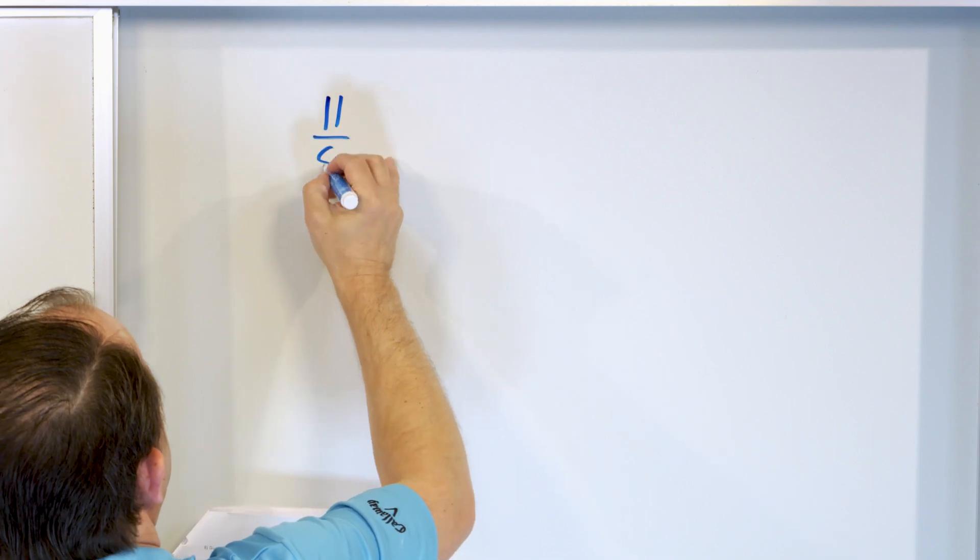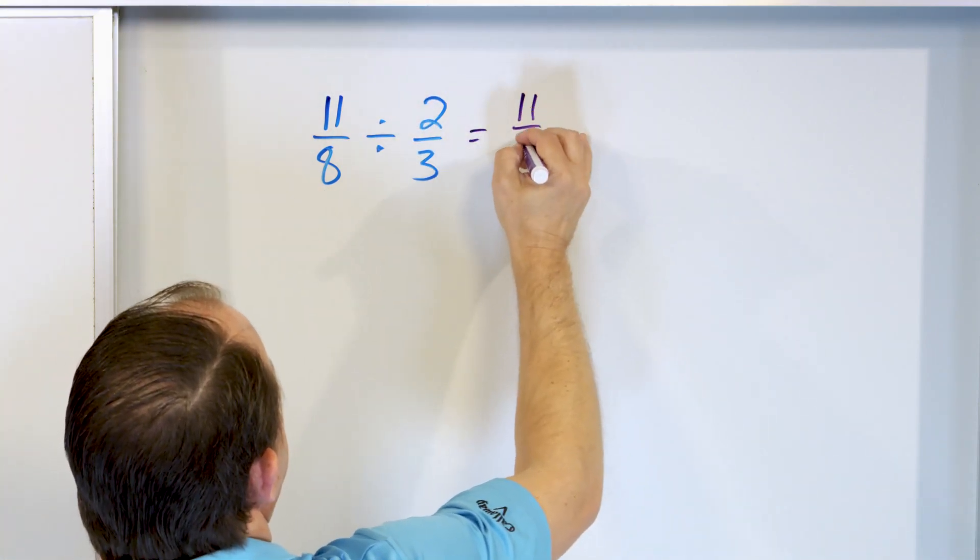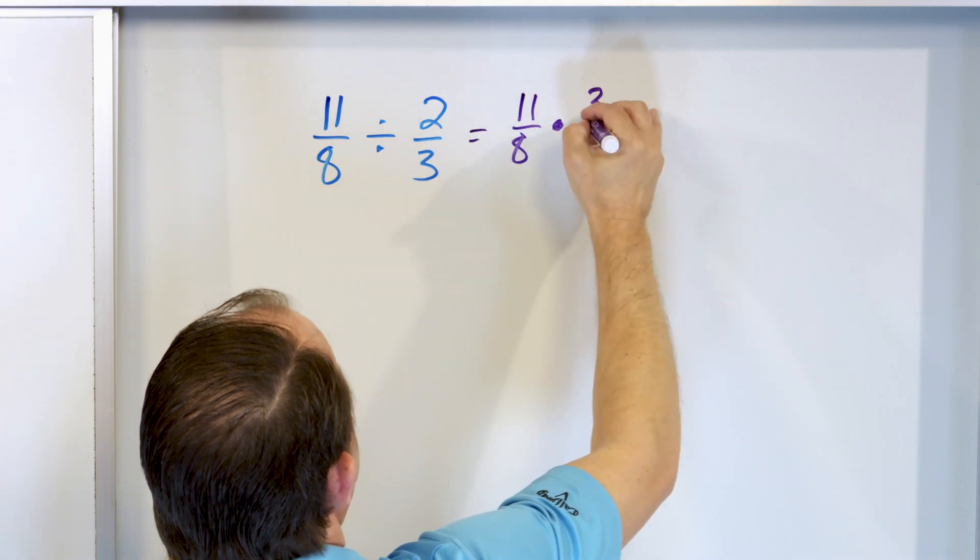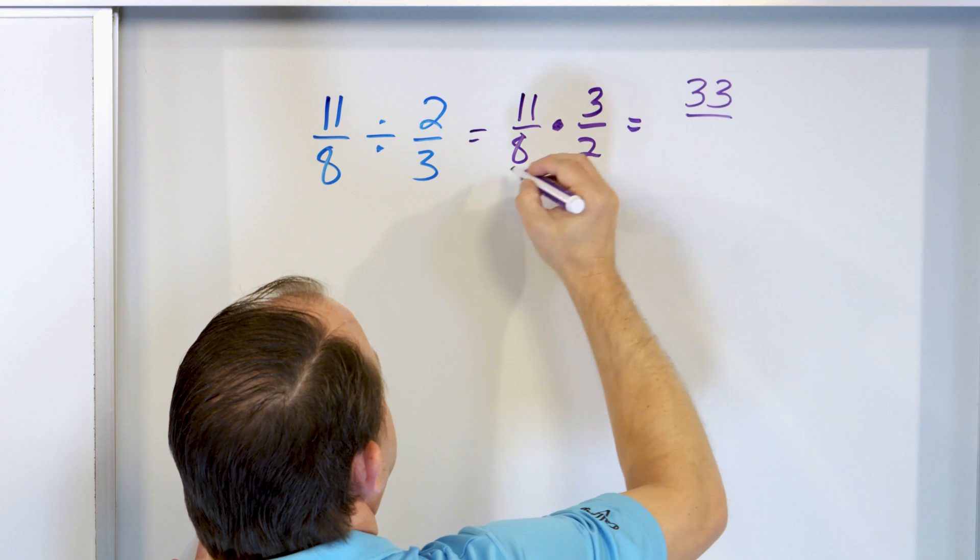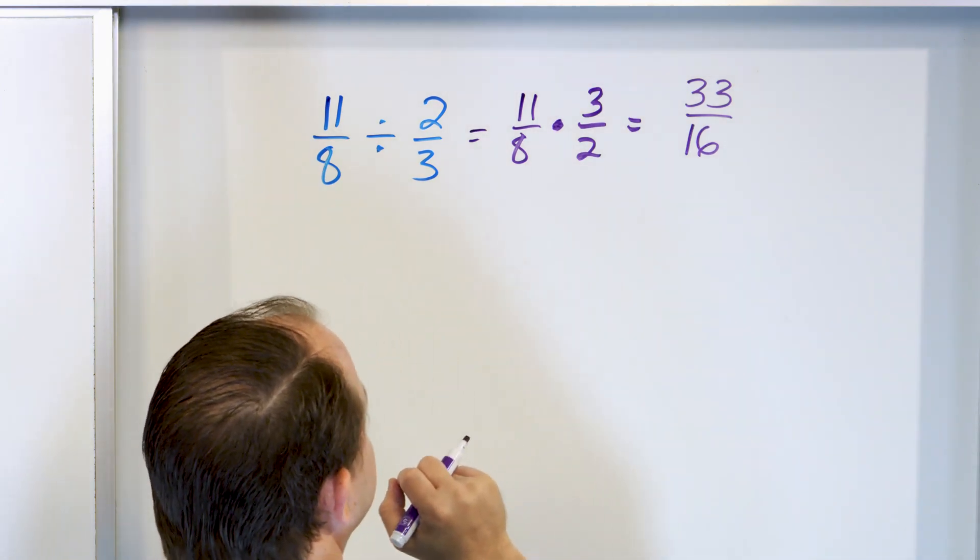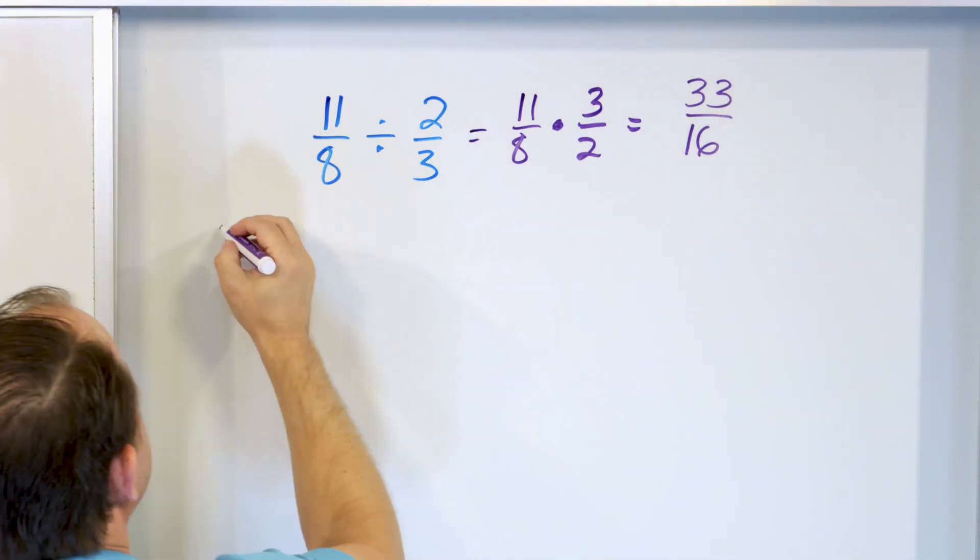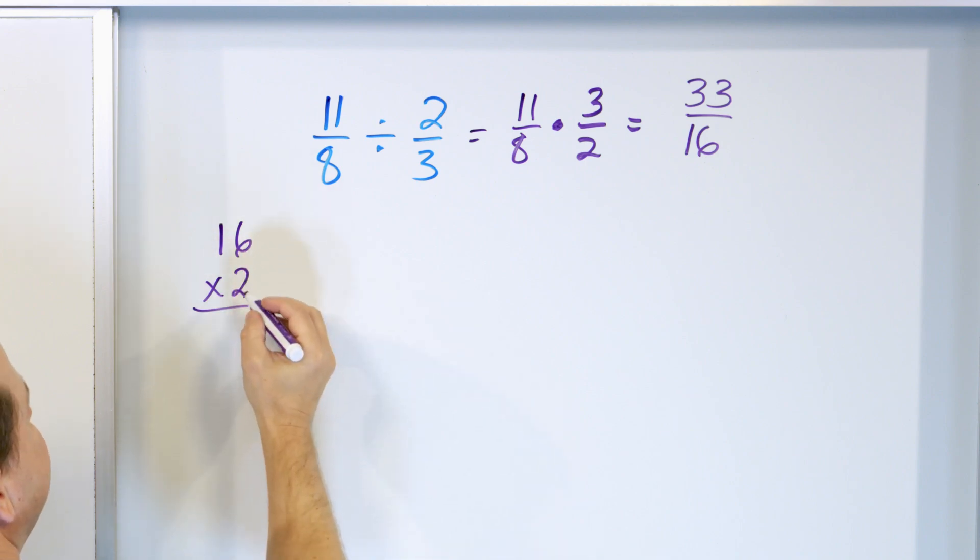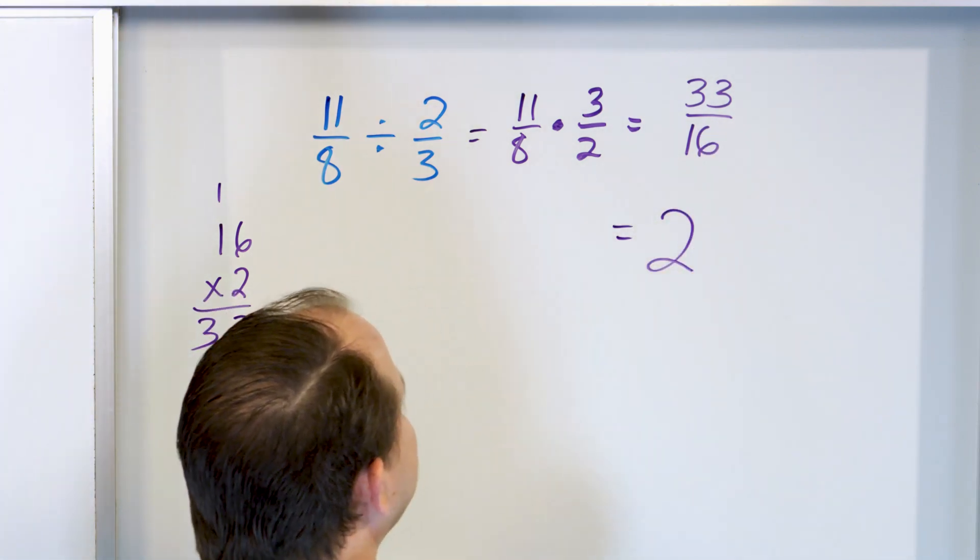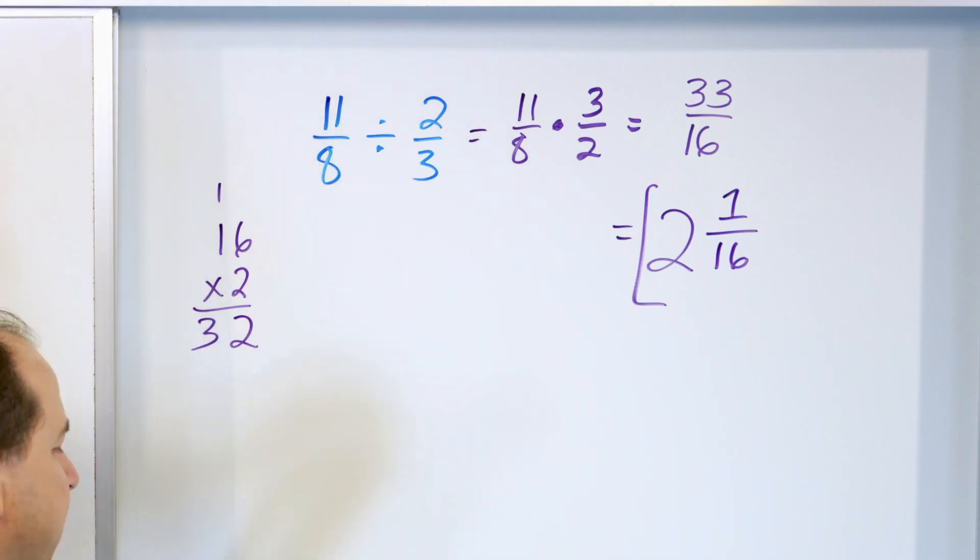Here's our very last problem of the day or of this topic. 11/8 and we'll divide it by 2/3. What do we do? The 11/8 stays the same. Change the multiplication, flip over to 3/2. And we get 11 times 3, 33. And 8 times 2, 16. So we get 33/16. Now we need to divide here. So 16 times 1 is 16. 16 times 2 is actually 32. If you're not sure, 16 times 2 is 32. So I know that this can go 2 whole times. 16 times 2 is 32. The difference 33 minus 32 is 1 over, then we have 16. So the answer is 2 and 1/16.